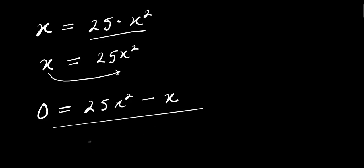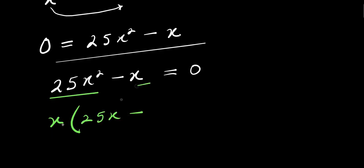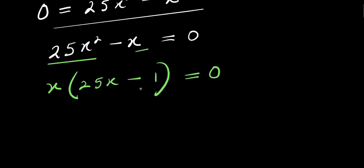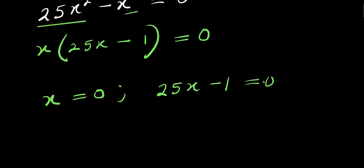We move the x over to get 0 equals 25x squared minus x. Rearranging, we have 25x squared minus x equals 0. We can factor out x: x times (25x minus 1) equals 0.